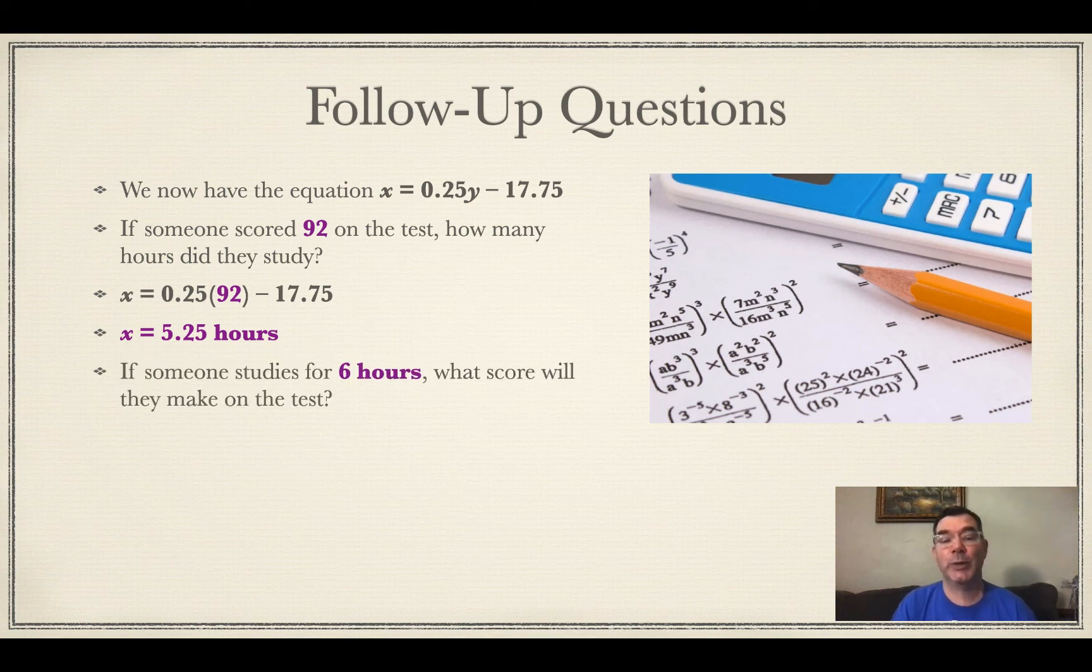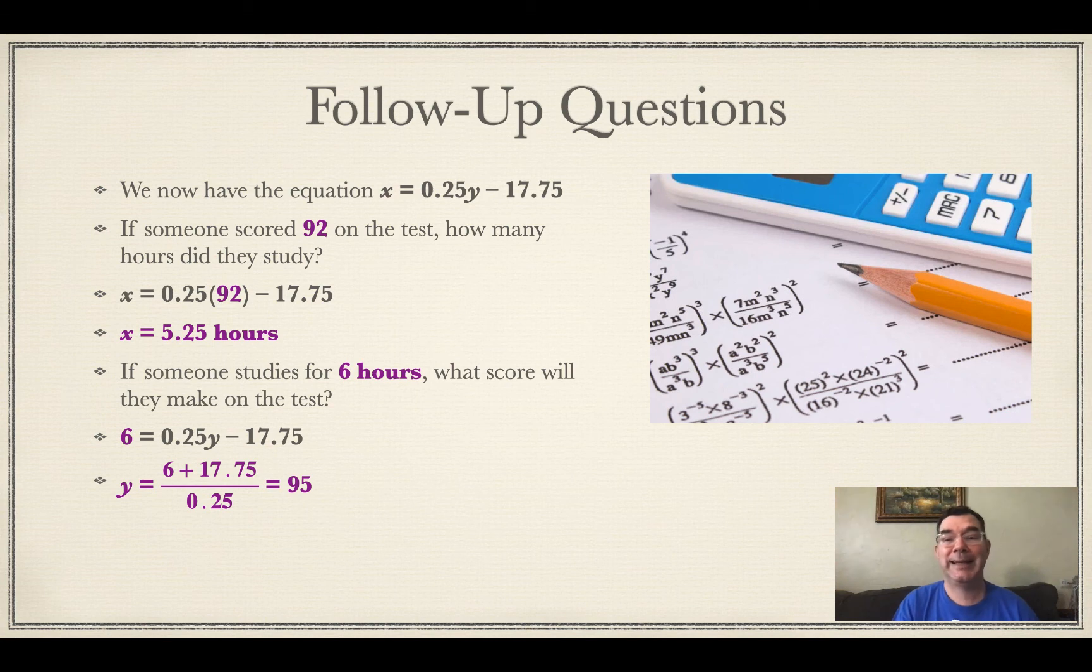And conversely, we can be given an X like someone studied for six hours and figure out what score they might make on the test. Okay, so now this is an X value and I'm trying to solve for the Y and I get that Y would be 95. So if someone studied for six hours, they might get a 95 on the test.